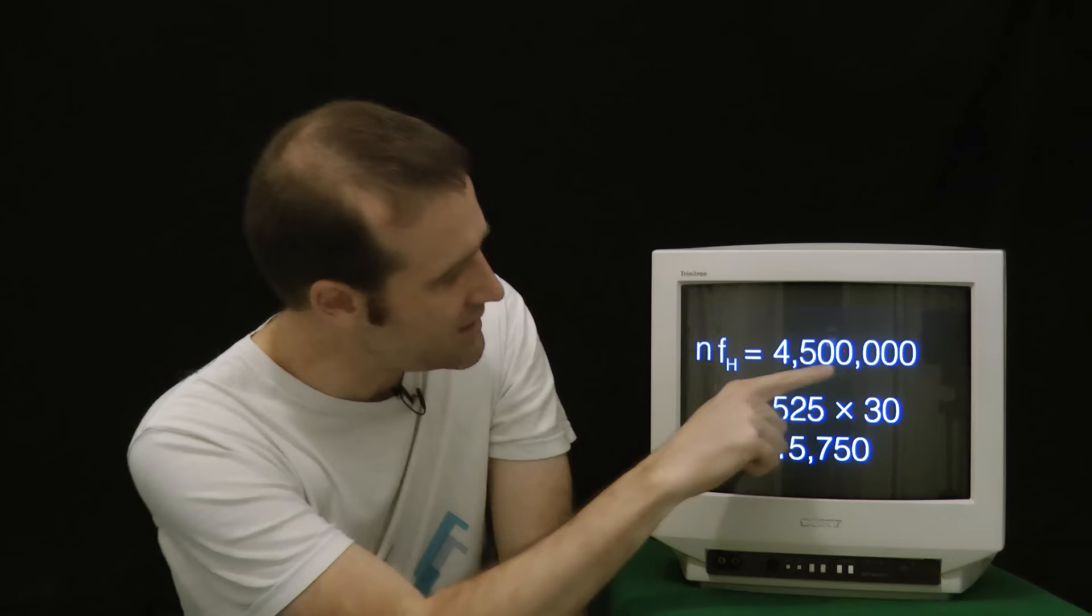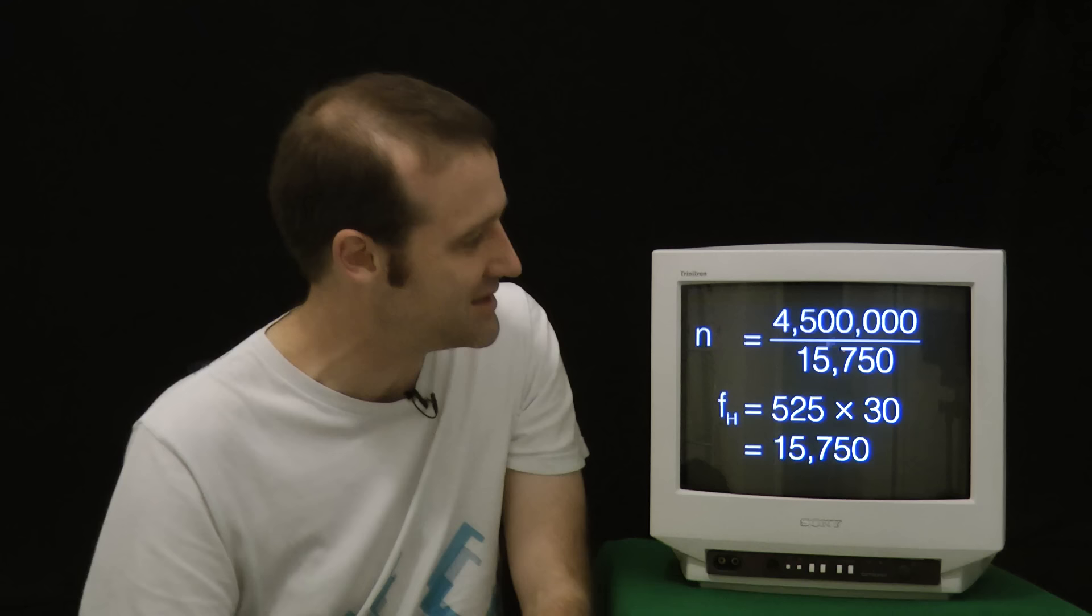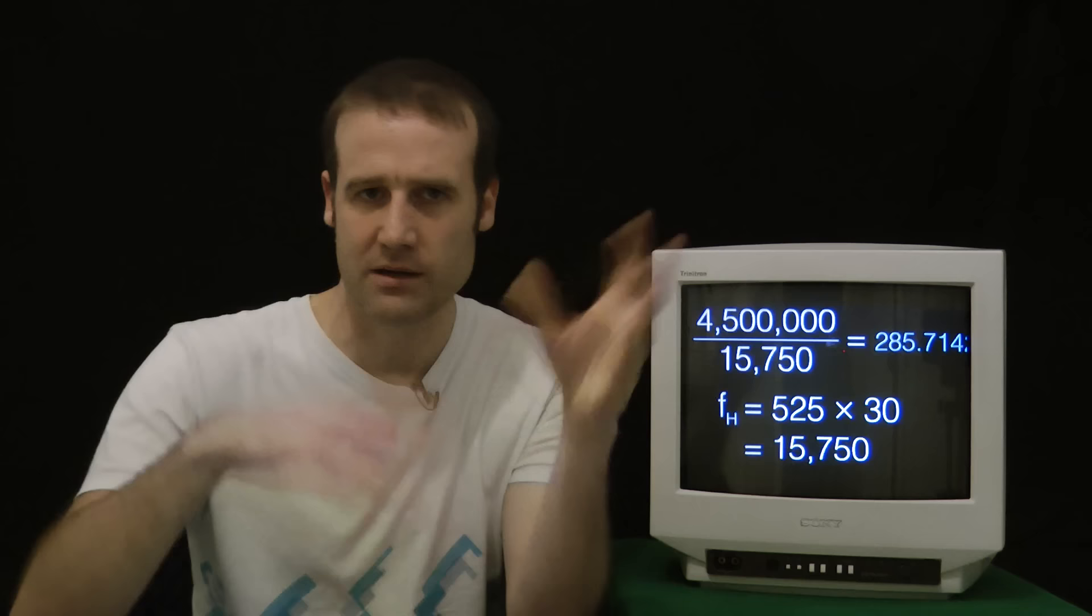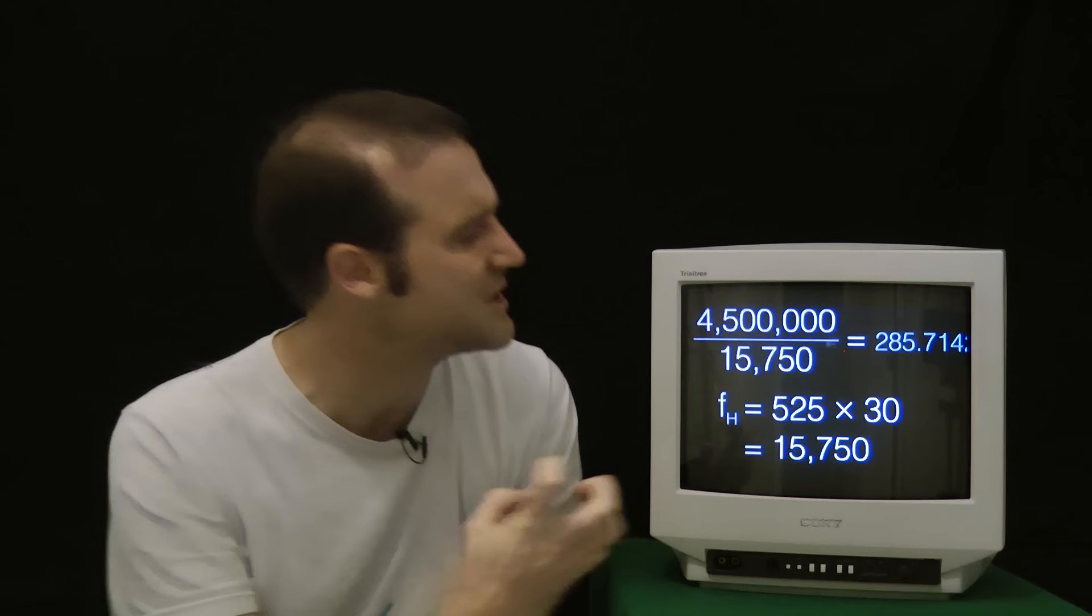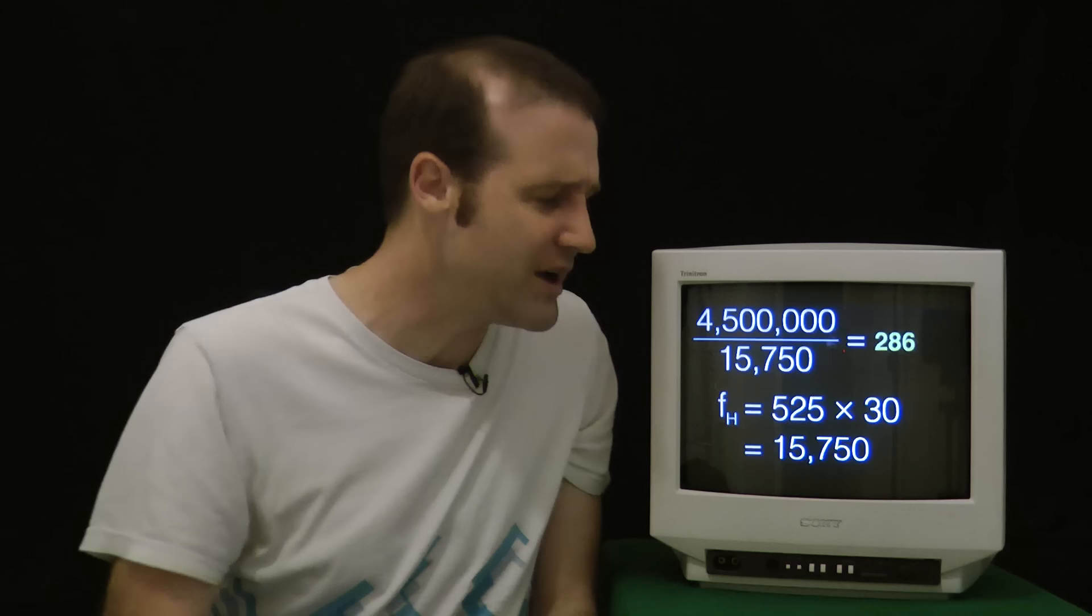We can then try dividing both sides up here by the horizontal frequency, and we hope to get an integer out the other side. But very sadly, we don't. We get 285.714 and then a bunch of other digits. And the poor engineers must have been like, oh, that's so close. Imagine! Imagine if that was 286. That would solve all of our problems, but it's not.